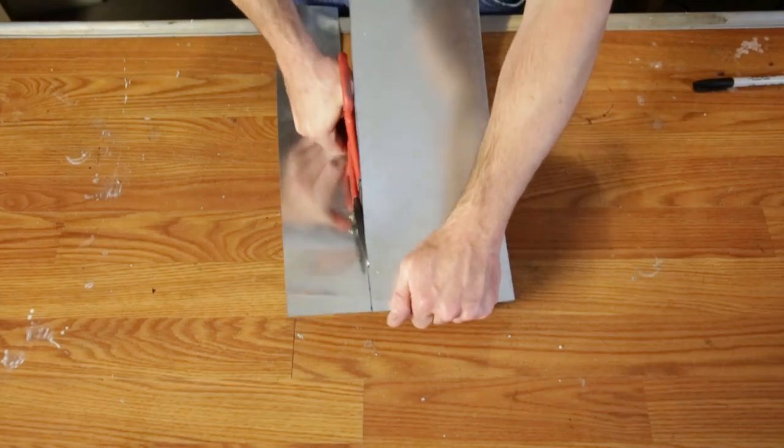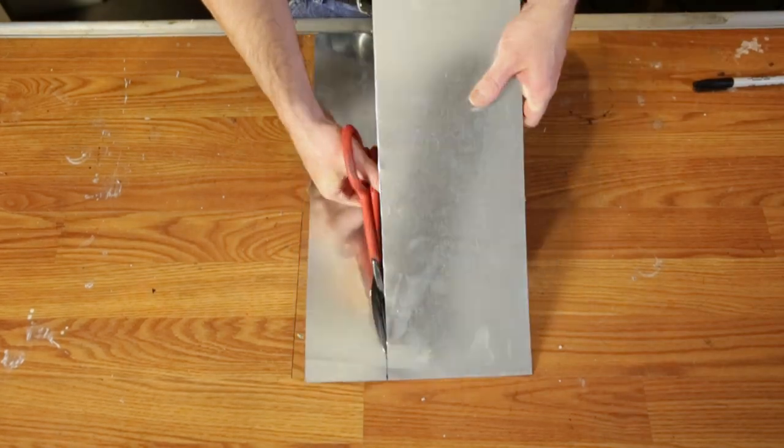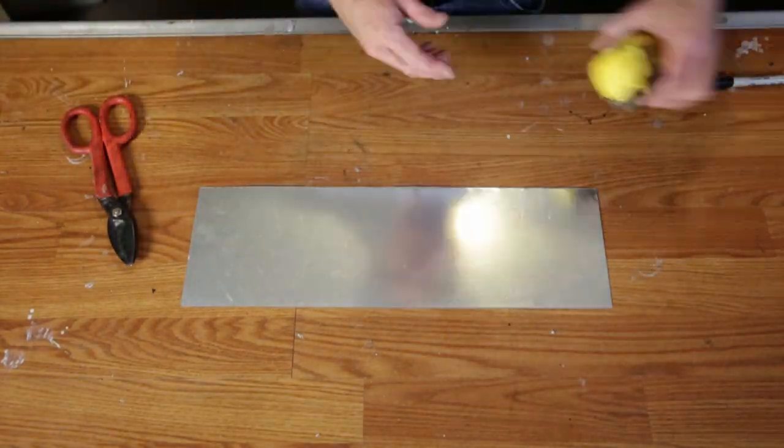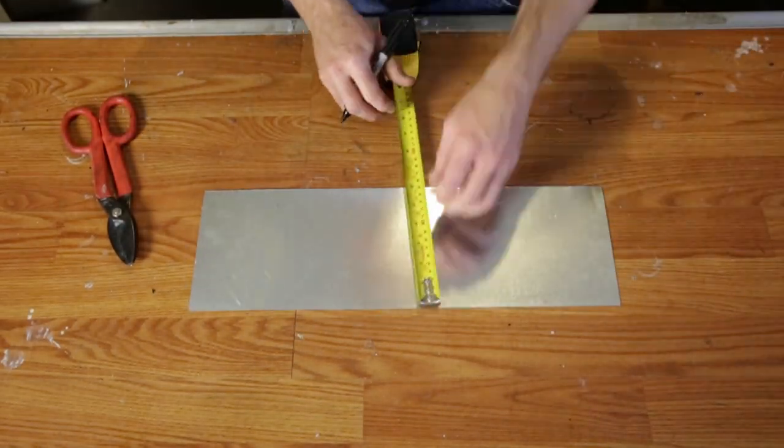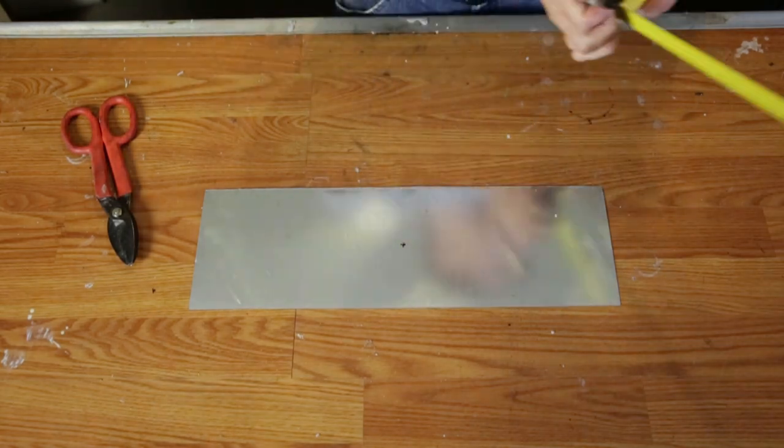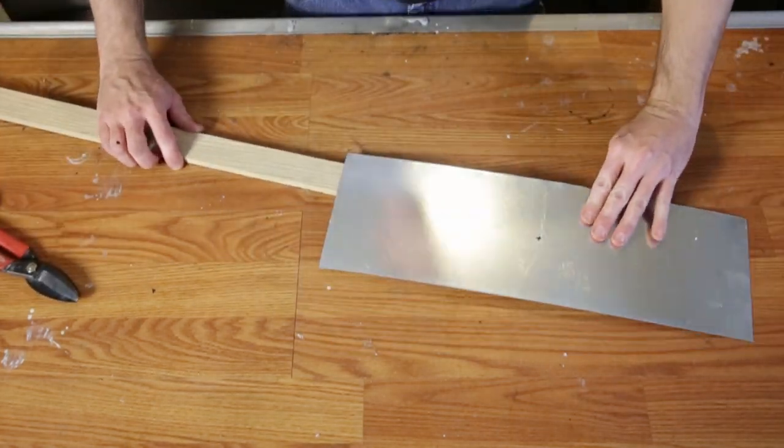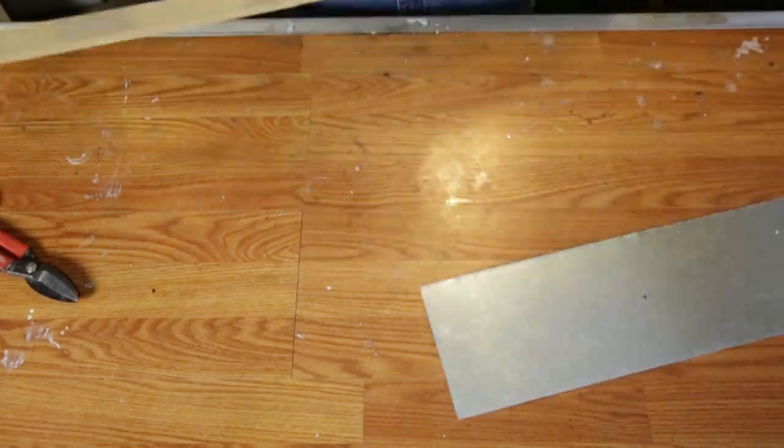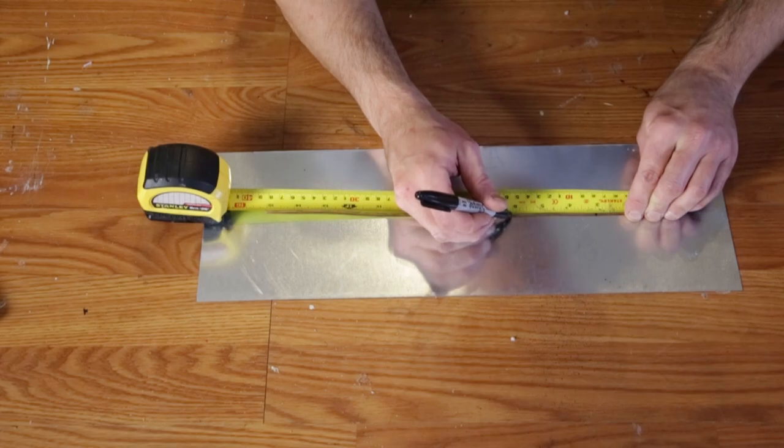Now mark the center of the panel. For a 19-inch panel, that's 9.5 inches from the edge, then mark the middle the other way—3 inches from the six-inch edge. You're going to want to drill a hole somewhere between 1/8 and 1/4 inch in diameter.